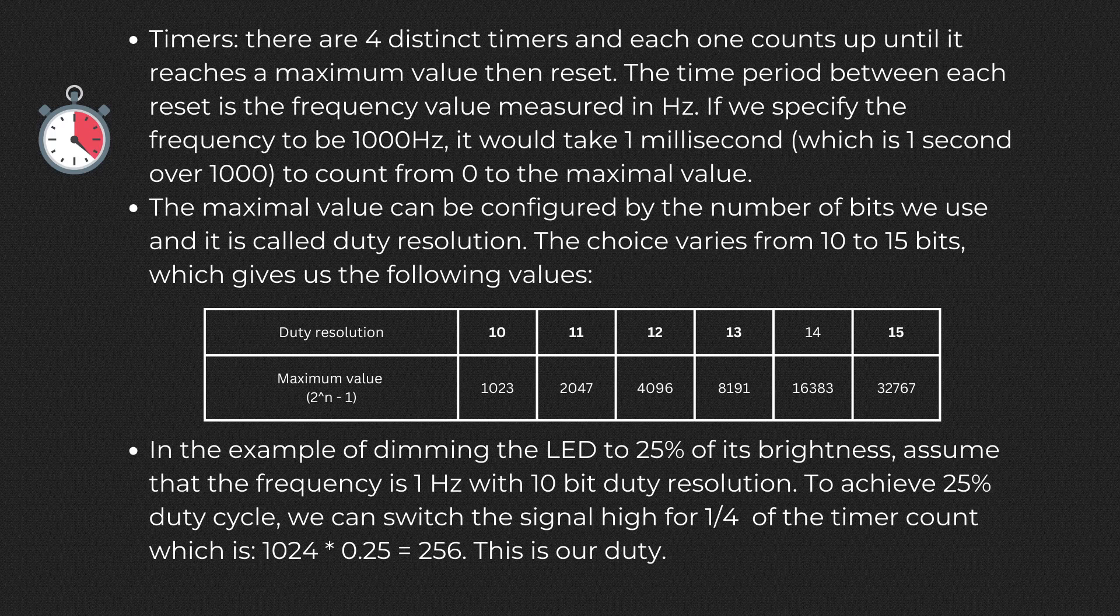Coming back to the example of dimming the LED, in this scenario we can set a PWM signal with a cycle of one second with 10-bit as the resolution. We specify the frequency to be 1 hertz. If we want the duty cycle of the PWM to be a quarter of a second, we can switch the signal high for one quarter of the timer count, which is 1024 * 0.25 = 256. This is our duty.